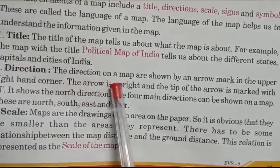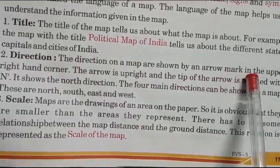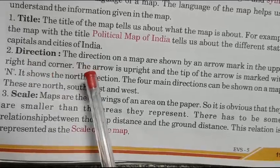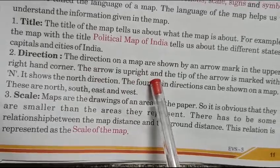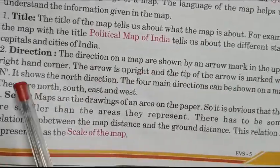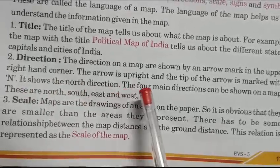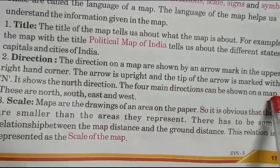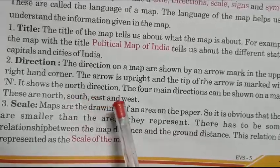2. Direction. The direction of a map is shown by an arrow marked in the upper right hand corner. The arrow is upright and the tip of the arrow is marked with N, which shows the north direction. The four main directions that can be shown on a map are north, south, east and west.